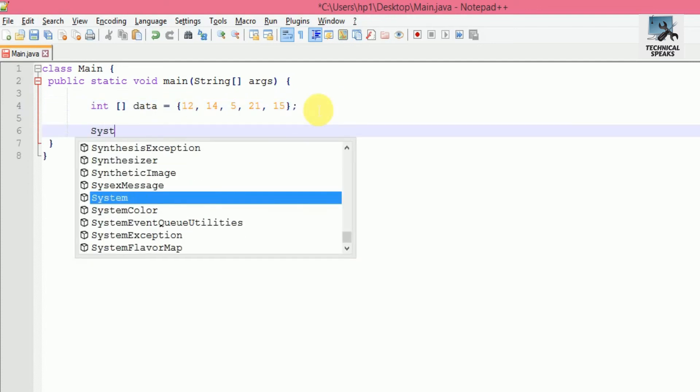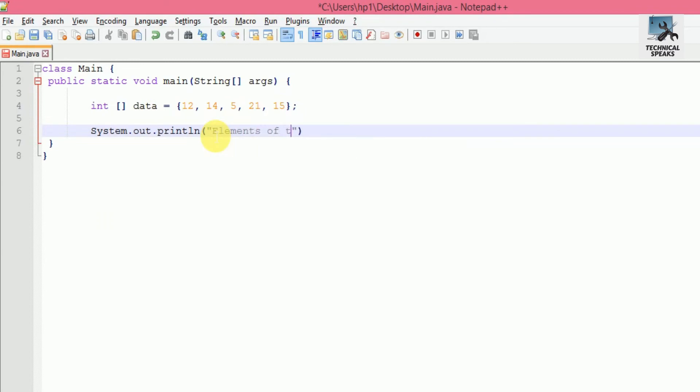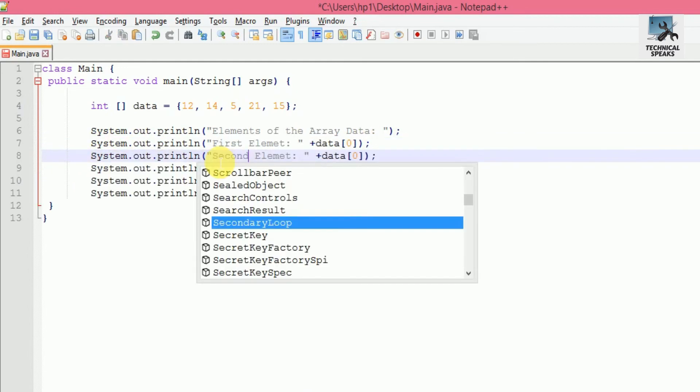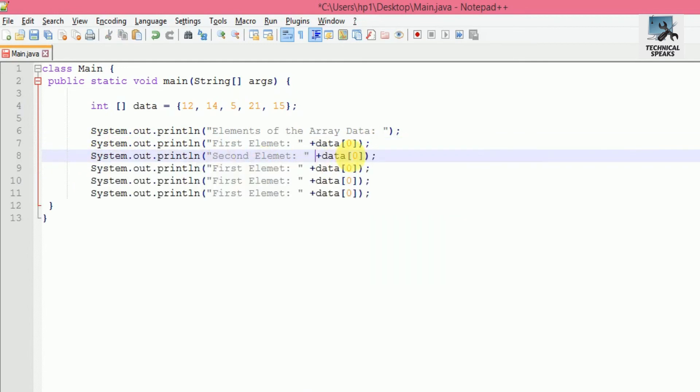statement like System.out.println. Inside the braces, pass elements of the array data. Then add print statements for the array elements. First element: pass data[0]. This will get the element at the 0th index. Similarly, for the second element pass data[1], for the third element, fourth element, and fifth element.